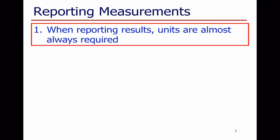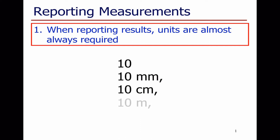In this video, we're going to show how to report measurements. When reporting measurements, units are almost always required. Just writing 10 as an observation doesn't mean anything — it could be 10 millimetres, 10 centimetres, 10 metres, or 10 kilometres. The units always have to be expressed, otherwise the measurement is pretty much meaningless.